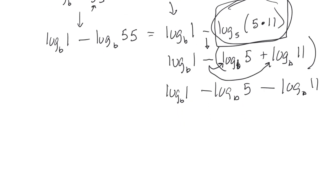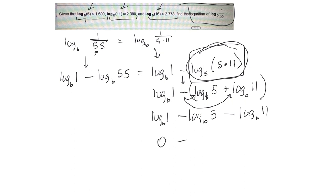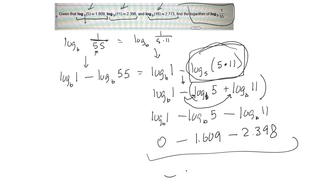To finish it off: log of any base of 1 is just 0. Then looking up the values, log base b of 5 is 1.609, minus log base b of 11 which is 2.3398. Then you just do that on your calculator — it comes out to negative 4 point something. You can do that on the calculator. That negative sign comes from log base b of 1 being 0, and then both of the following terms have to be negative. Hopefully that helps.